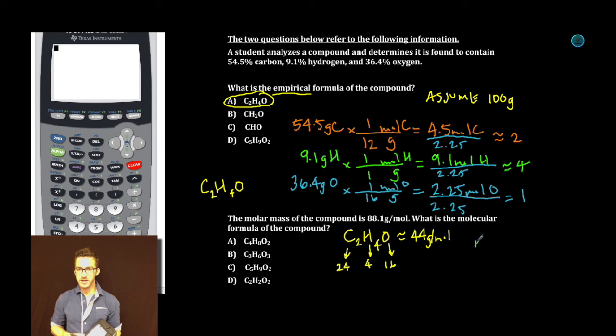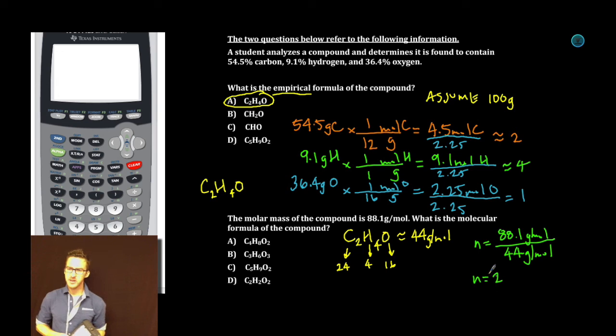Let's determine our multiplier. If the molecular formula has a molar mass of 88.1 grams per mole, and the empirical formula has a molar mass of about 44 grams per mole, who needs a calculator? The molecular formula is going to be two times the empirical formula. We just need to double all of the subscripts in our empirical formula to get C4H8O2, answer choice A again. And we are done.